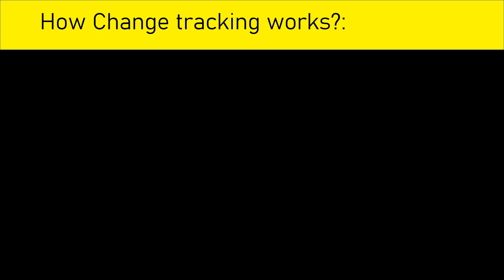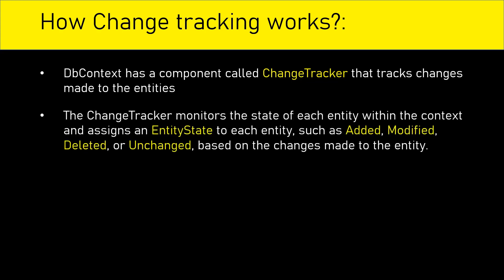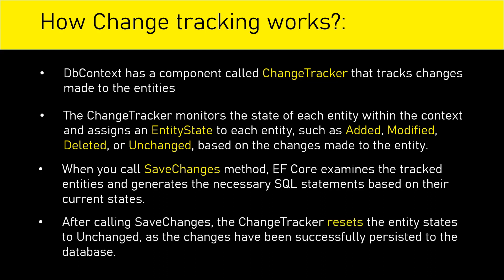Let's understand how change tracking works. DbContext has a component called change tracker that tracks changes made to the entities. The change tracker monitors the state of each entity within the context and assigns an entity state to each entity — such as Added, Modified, Deleted, or Unchanged — based on the changes made to the entity. When you call the SaveChanges method, Entity Framework Core examines the tracked entities and generates the necessary SQL statements based on the current states. After calling SaveChanges, the change tracker resets the entity states to Unchanged, as the changes have been successfully persisted to the database.